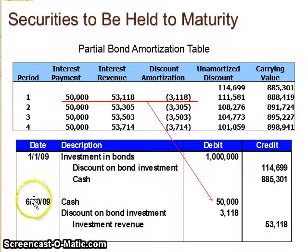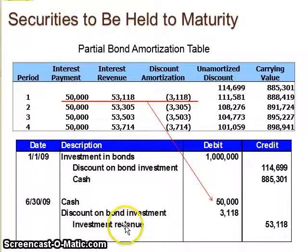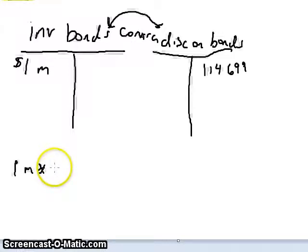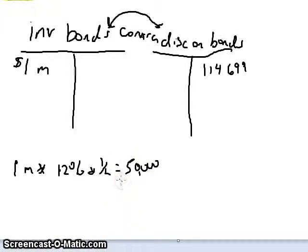If you look at what happens on June 30th, there are a couple of pieces. You have a debit to cash for $50,000, a debit to discount on bond investment of $3,118, and a credit to investment revenue for $53,118. The $50,000 is the interest piece — it comes from the $1,000,000 of principal times the interest rate of 10% times half a year. That's how much cash you're actually getting, so you've got a debit to cash of $50,000.